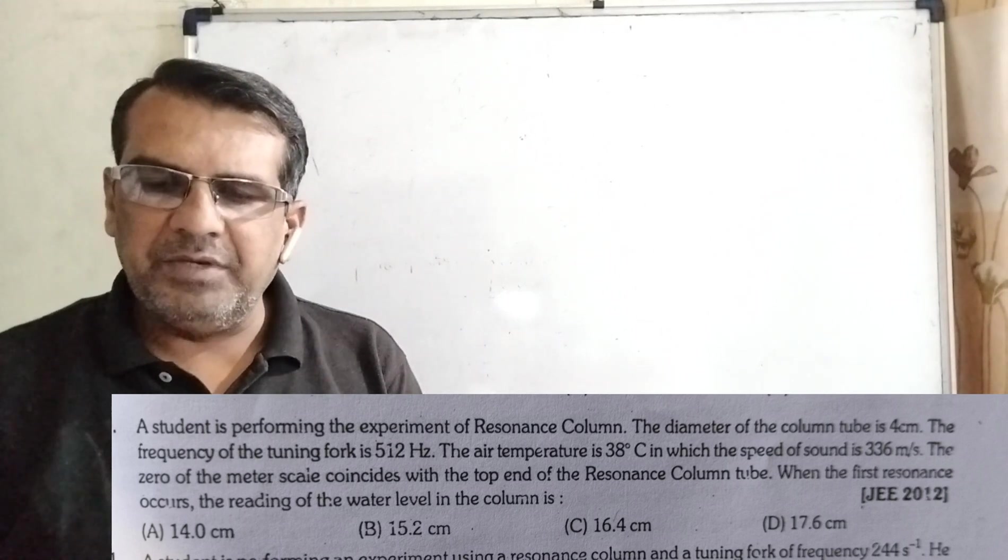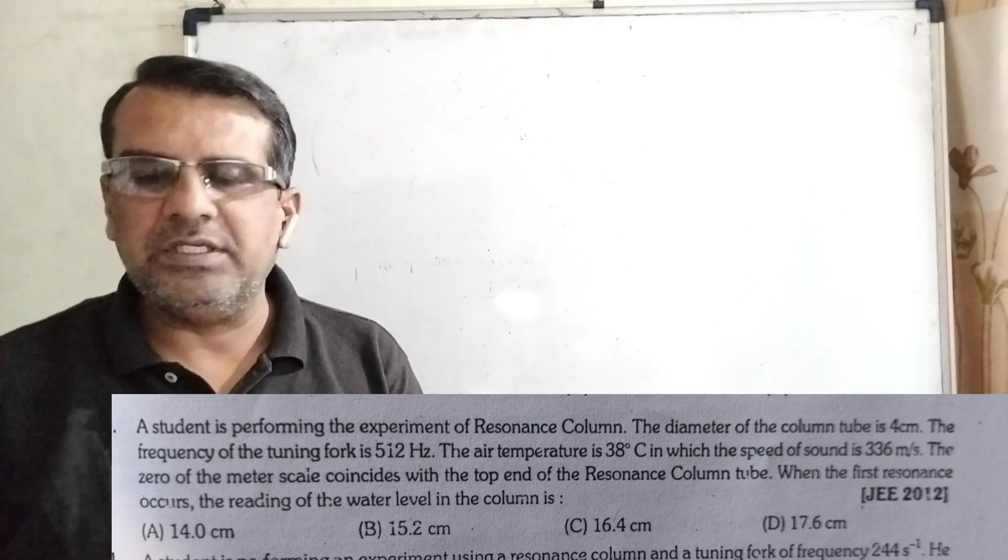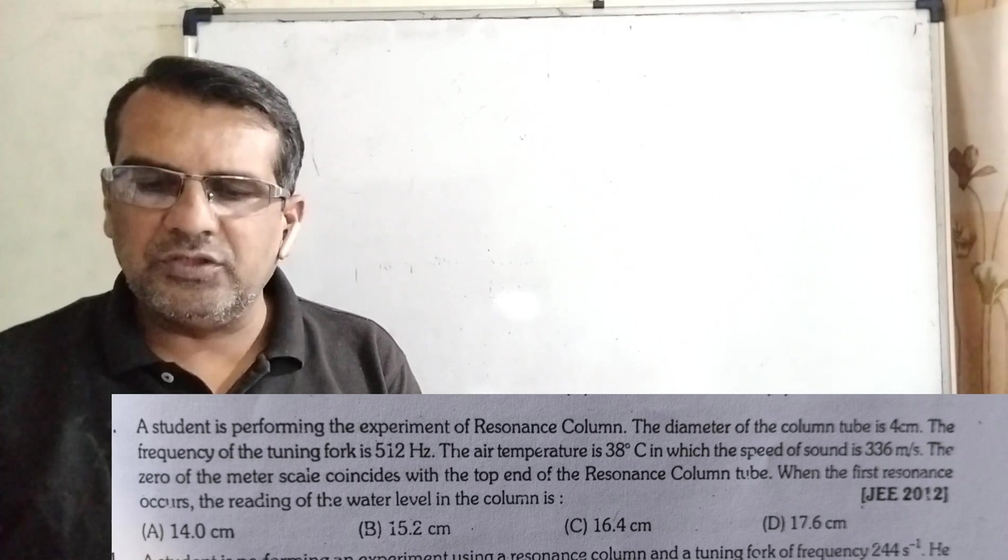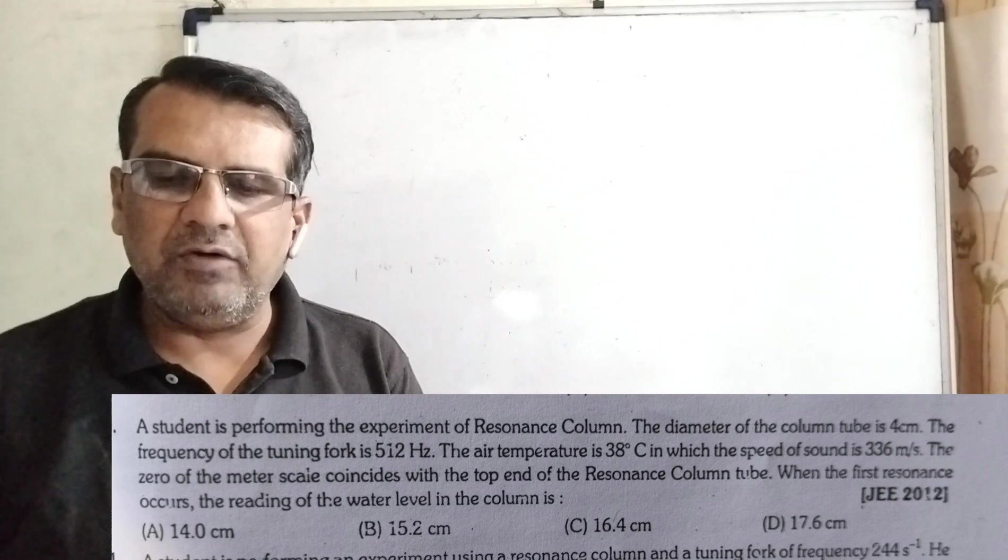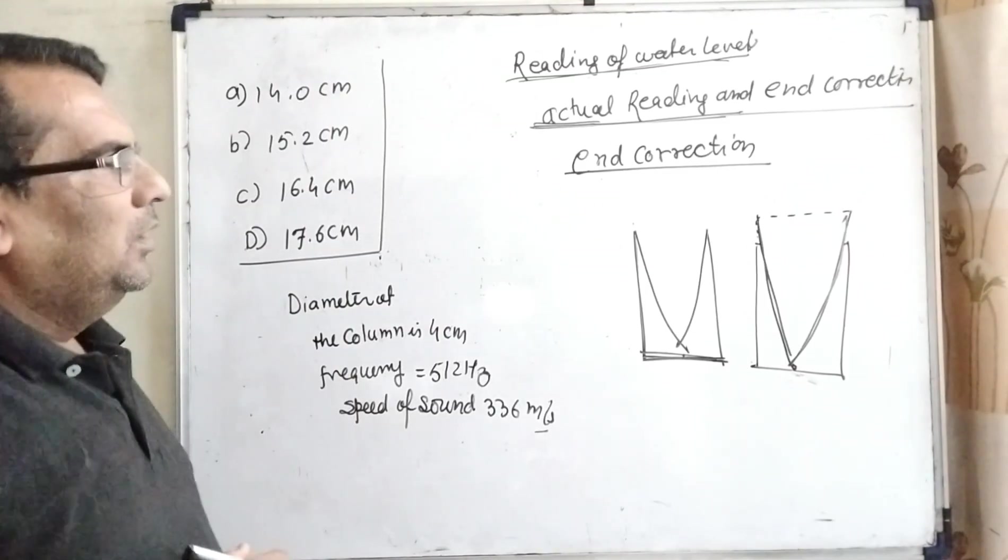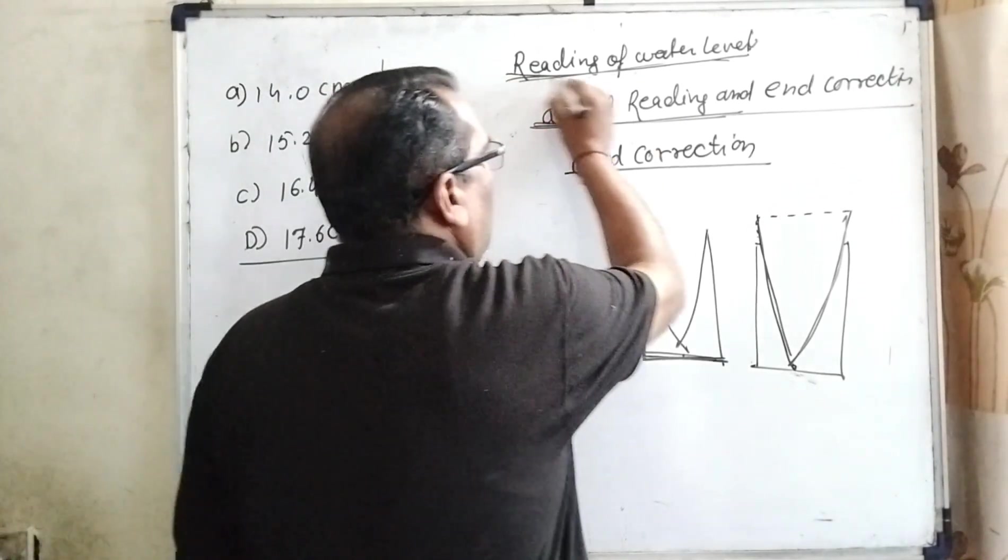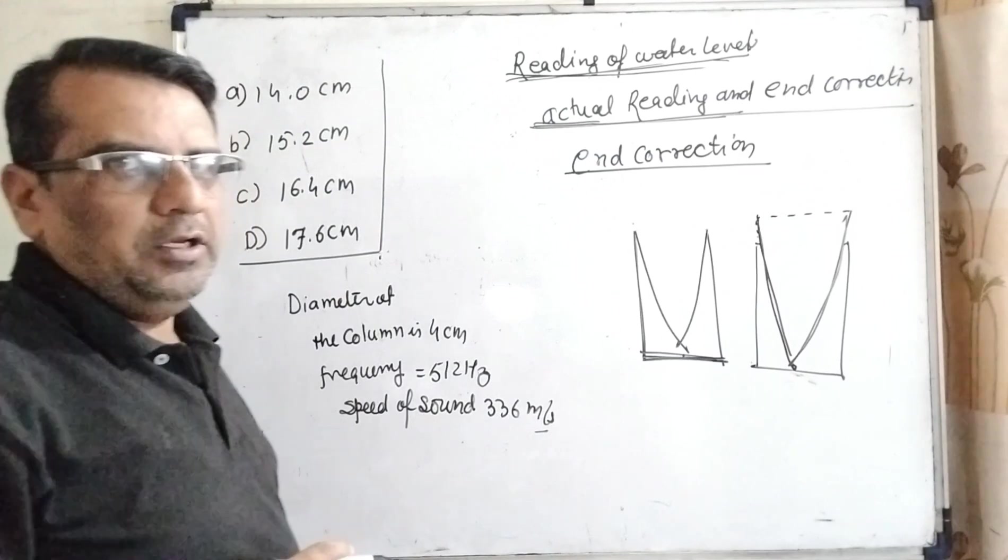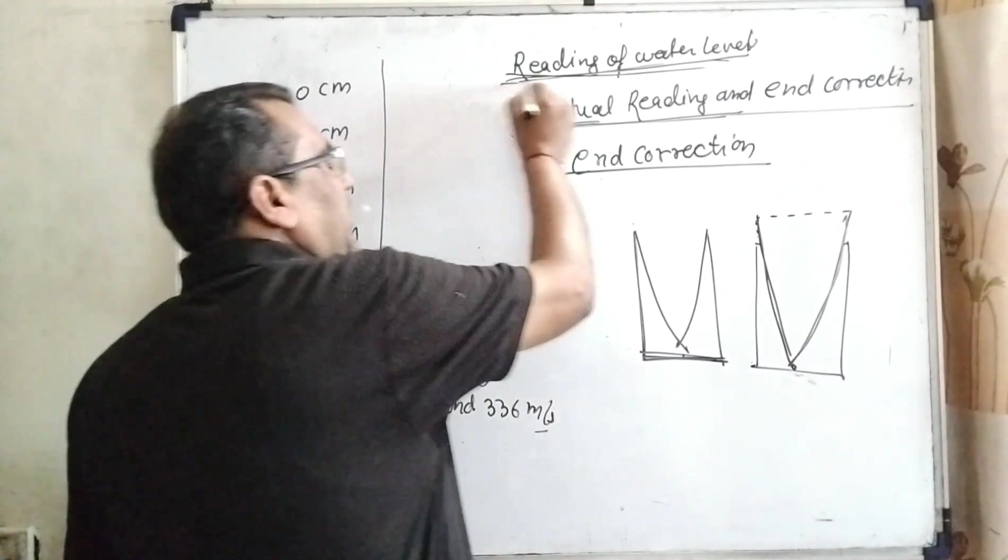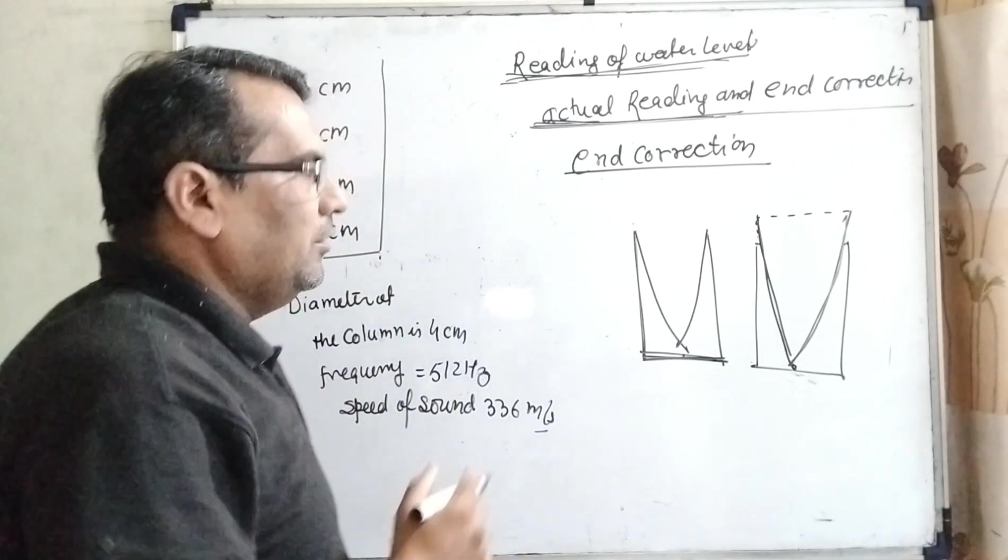The zero of the meter scale coincides with the top end of the resonance column. When the first resonance occurs, the reading of the water level in the column is? The key point to solving this question is how we take the readings of the water column. Water column reading is actual reading plus end correction equals wavelength.